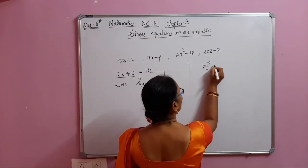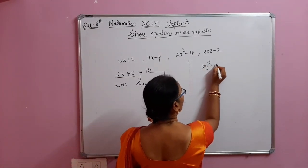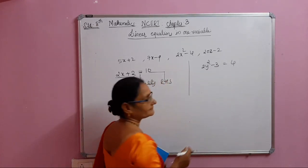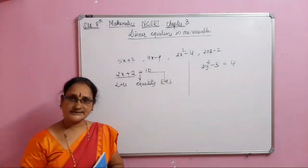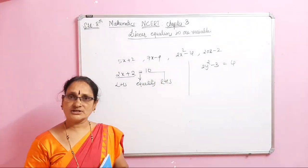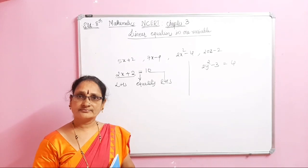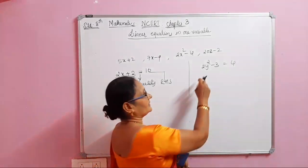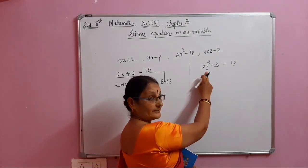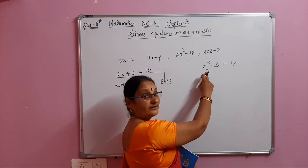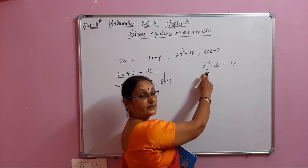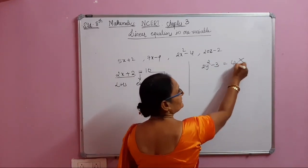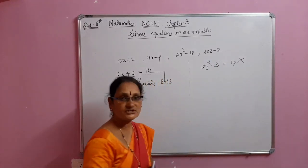Now, consider 2y squared minus 3 equal to 4. Is it a linear equation? No. Why? There is only one variable, but the power is 2. So this is not a linear equation.